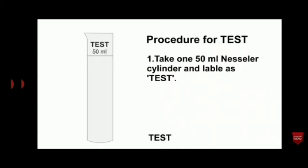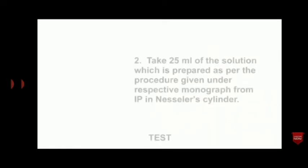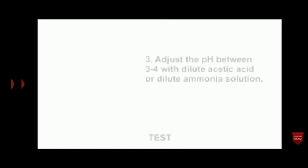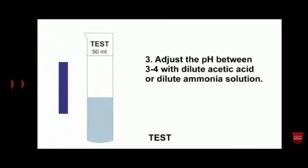Procedure for the test: take a 50 ml Nessler cylinder and label it as test. Take 25 ml of the solution which is prepared as per the procedure given under your respective monograph from IP in the Nessler cylinder. Adjust the pH between 3 to 4 with dilute acetic acid or dilute ammonia solution.